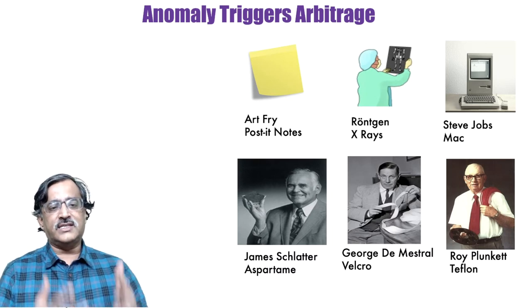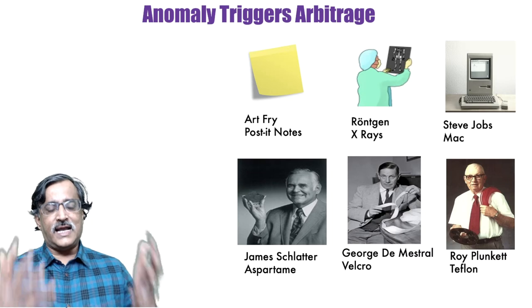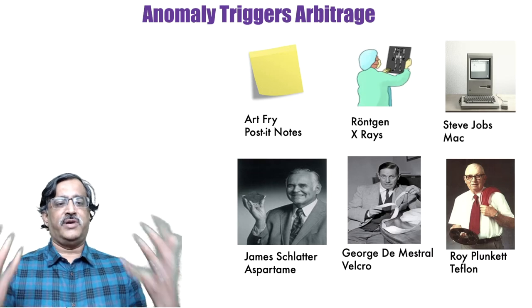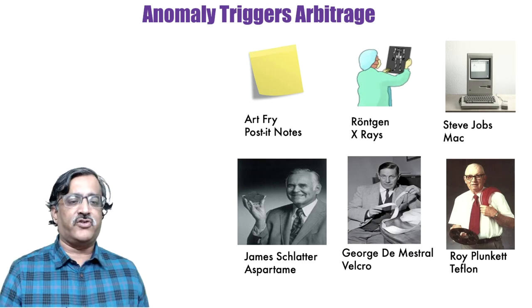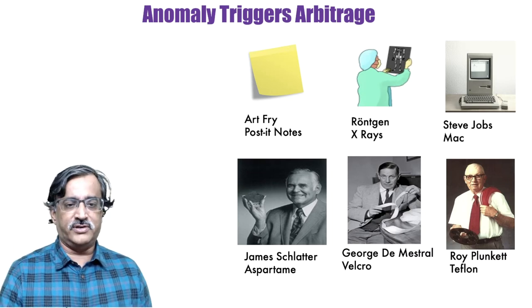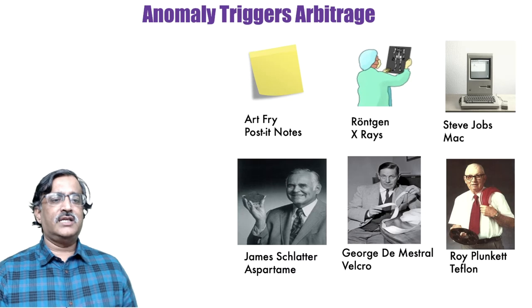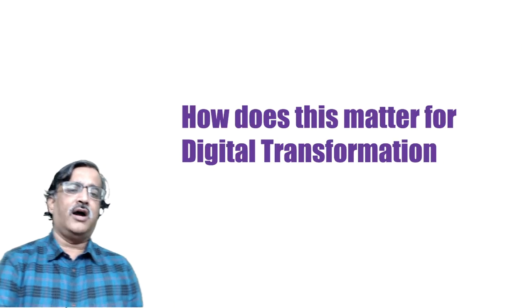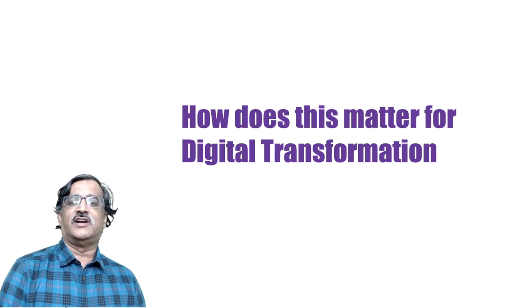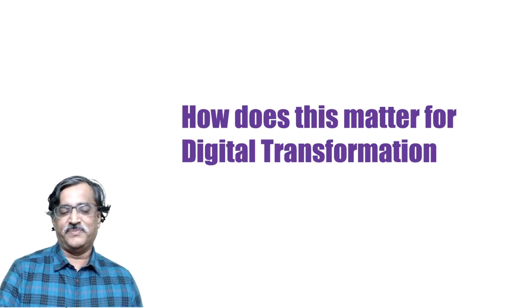Anomalies can trigger directly a transformation, or an arbitrage which leads to a transformation. At this point, if you are like me, you are wondering how to apply this to digital transformation.